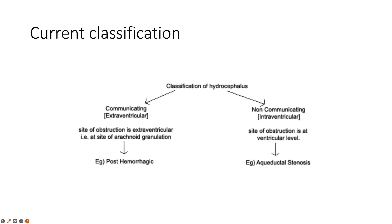In communicating hydrocephalus, the site of obstruction is extraventricular — outside the ventricles at the arachnoid granulations where CSF is absorbed into the venous sinuses. For example, after hemorrhage, residue blocks these granulations. Non-communicating or intraventricular hydrocephalus has its obstruction at the ventricular level; aqueductal stenosis is a classic example, where obstruction of the cerebral aqueduct as a congenital malformation causes proximal hydrocephalus.